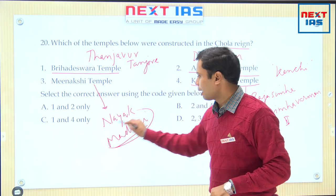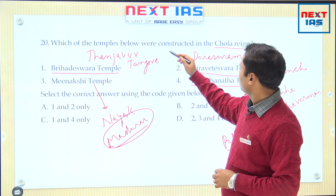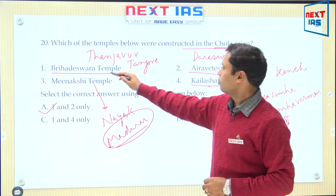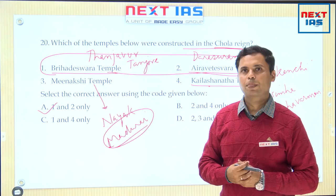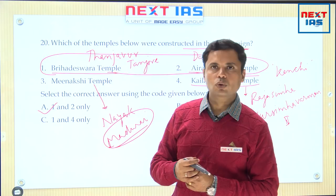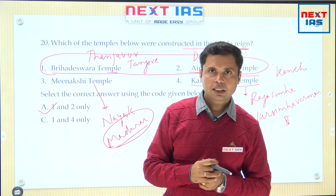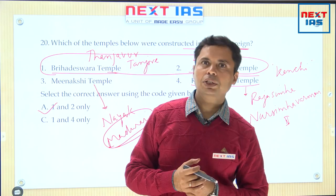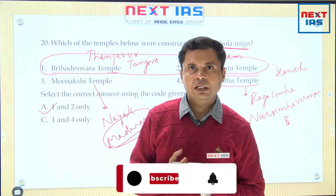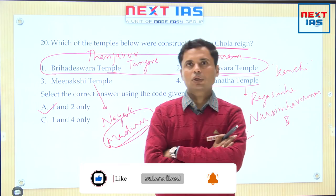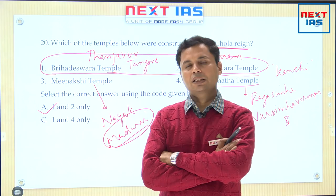The Kailashanath Temple was built by Rajasimha, also known as Narasimhavarman II of the Pallava dynasty, who ruled from their capital city Kanchi, also known as Kanchipuram. So the Meenakshi Temple was built by the Nayak rulers, the Kailashanath Temple by the Pallavas. The first two temples — Brihadeeswara and Airavatesvara — were built by the Chola rulers. These temples are also part of the UNESCO World Heritage Sites. So the answer is 1 and 2. That is all — these are the 20 questions discussed to show how the NextIAS test series will approach the Civil Services preliminary exam scheduled for 27th June 2021.